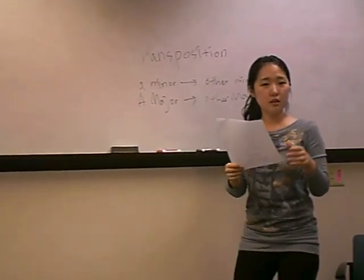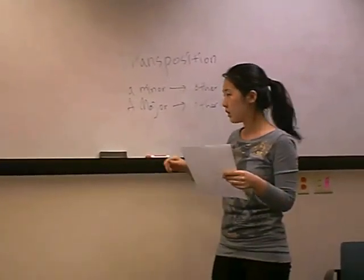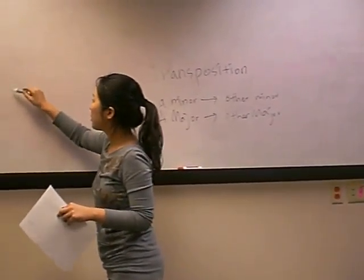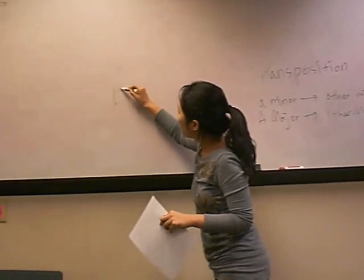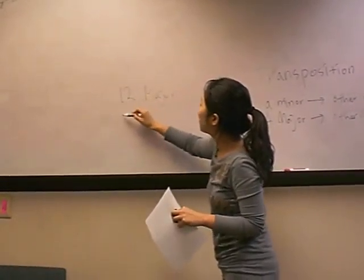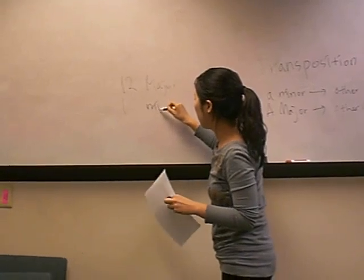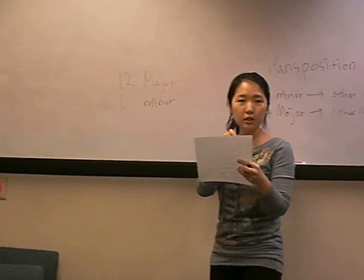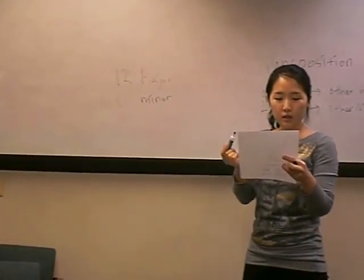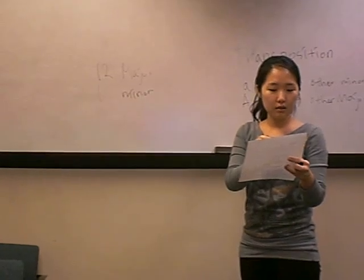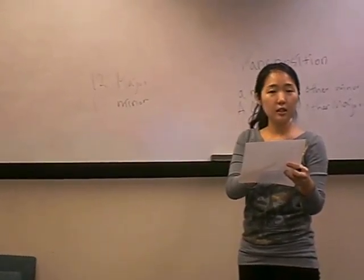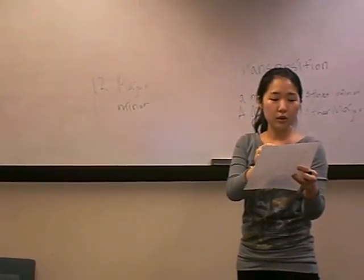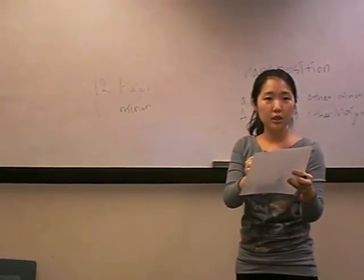Let's look at the handout. You can see the circle, right? Actually, there are 12 major keys and 12 minor keys. The outer circle is the major keys, and the inner circle is the minor keys. So if you see music in C major, it can be transposed to G major, D major, A major, E major — something like that, every major key.